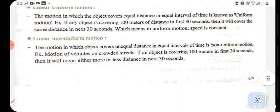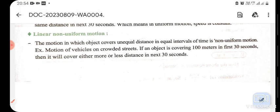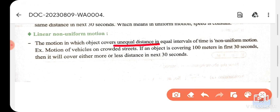If an object does not move equal distances in equal intervals of time, we say that the body is in non-uniform motion.